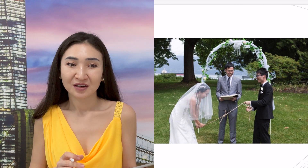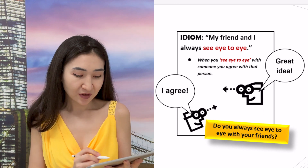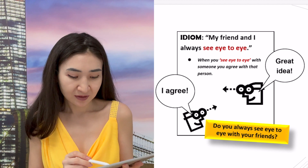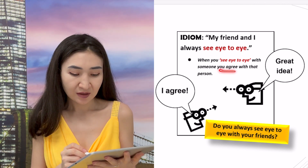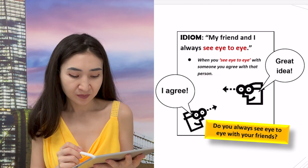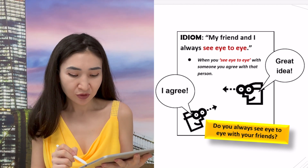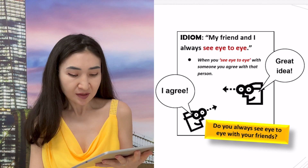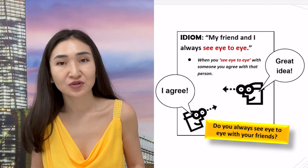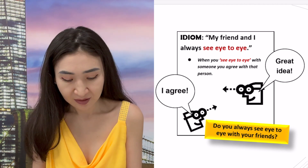Using these unusual phrases will reflect very well on you. The last phrase is 'see eye to eye,' meaning to agree with someone on a subject. Example: 'My friend and I always see eye to eye.' You can also ask: 'Do you always see eye to eye with your friends?' Use this when describing your relationship with close friends, family members, colleagues, or schoolmates to show the examiner your good vocabulary, which is going to be beneficial during your IELTS speaking part.